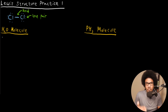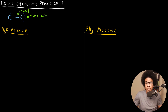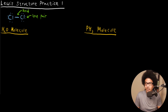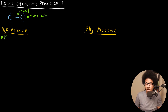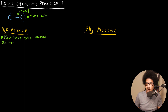When starting these problems, the first thing you want to ask yourself is how many valence electrons are in this molecule? You should be able to start every single Lewis structure problem by asking yourself how many total valence electrons are in the molecule.